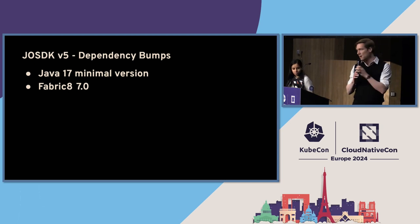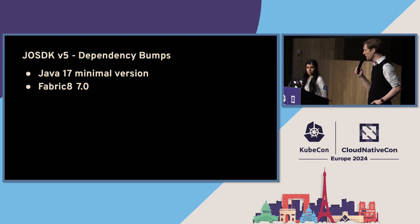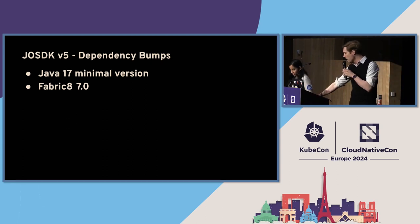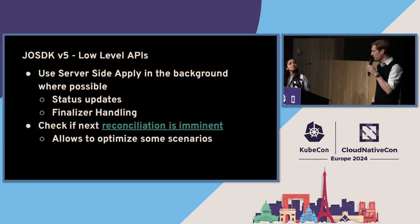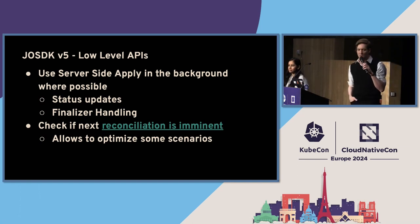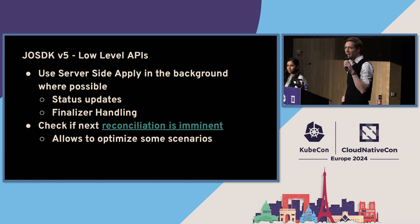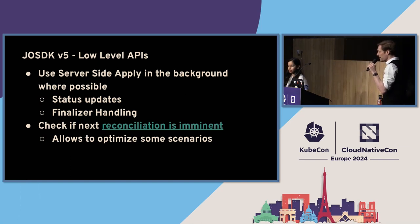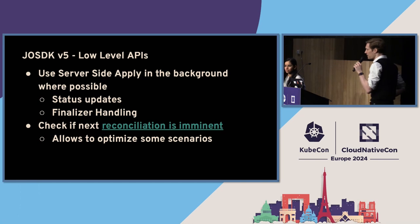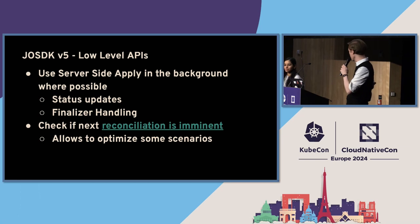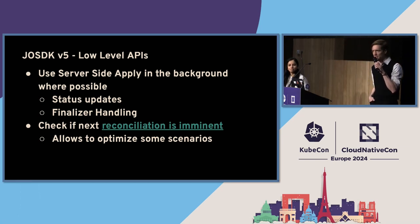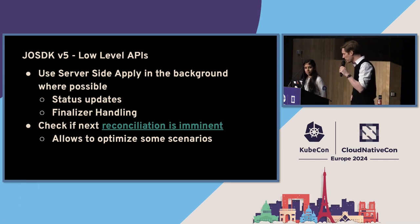In terms of dependency bumps, they've moved up to Java 17 and Fabric8 7.0, just keeping up with things. In terms of actual features: they've been changing things over to use server-side apply, particularly in handling updates to statuses and handling finalizers. This is actually something I don't think we're up to on the Golang side yet, because that changes a lot of stuff on the back end.